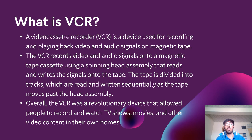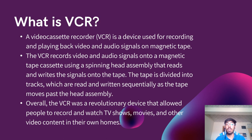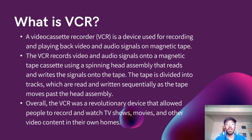A video cassette recorder is a device used for recording and playing back video and audio signals on a magnetic tape. The VCR records video and audio signals onto a magnetic tape cassette using a spinning head assembly that reads and writes the signal onto the tape. The tape is divided into tracks which are read and written sequentially as the tape moves past the head assembly. Overall, the VCR was a revolutionary device that allowed people to record and watch TV shows, movies, and other video content in their own homes.